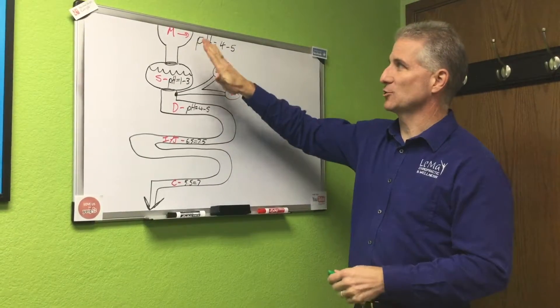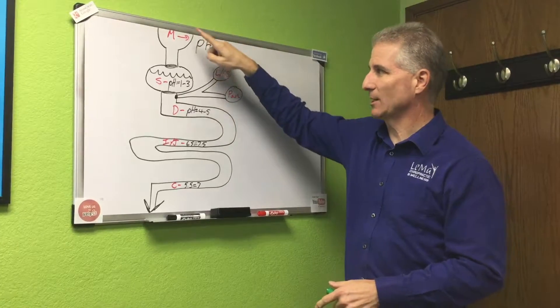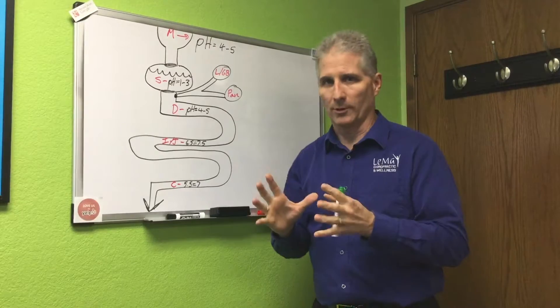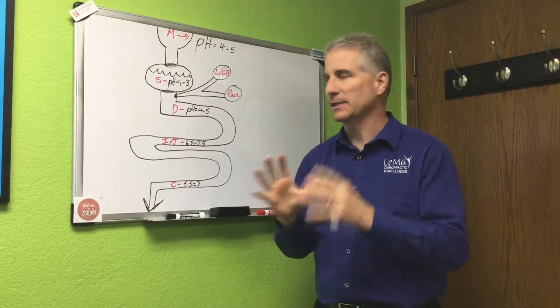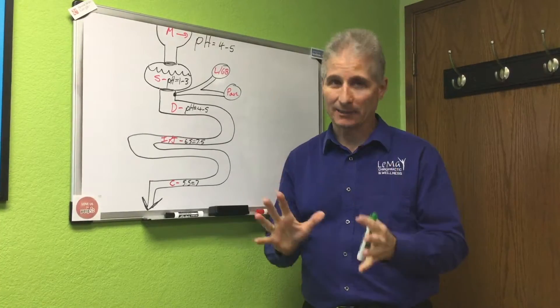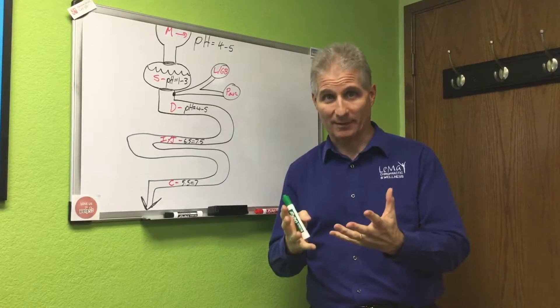So what happens is your mouth is between the pH of four and five. So when you eat something and it goes down into your stomach here, the stomach is an acid organ. It should be highly acidic and its pH is typically right around between one and three. That is highly acidic to be able to break down food. That's what it's supposed to be like.